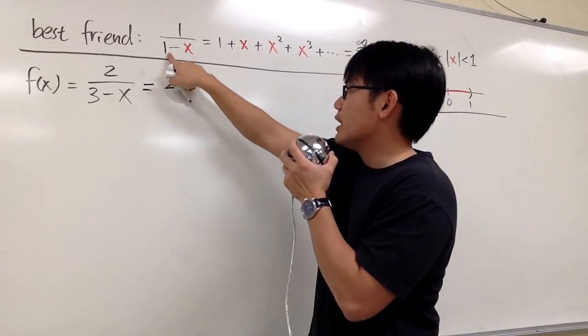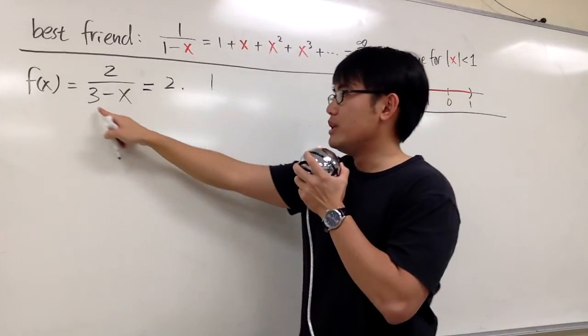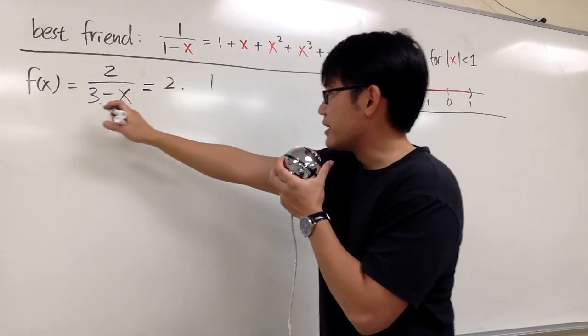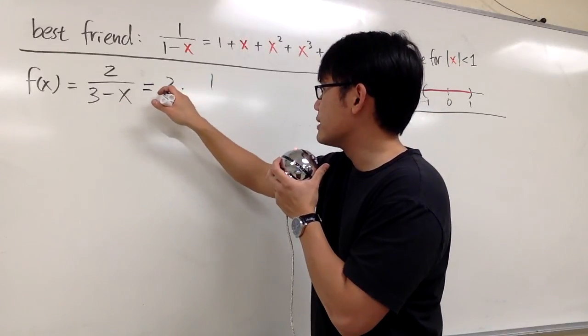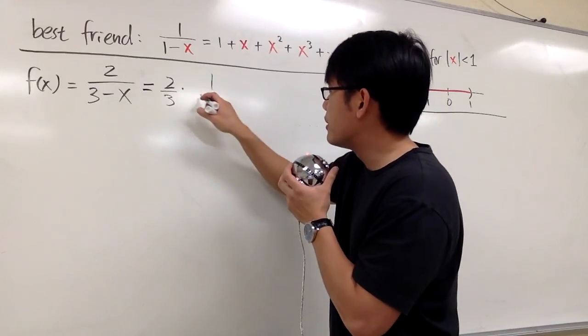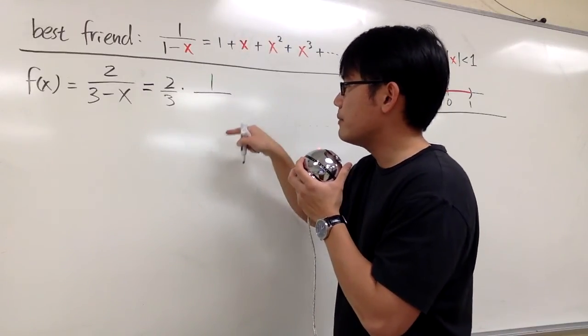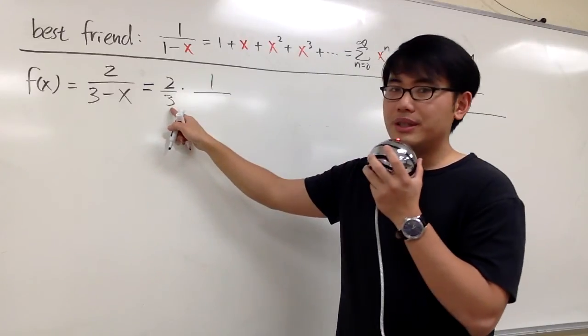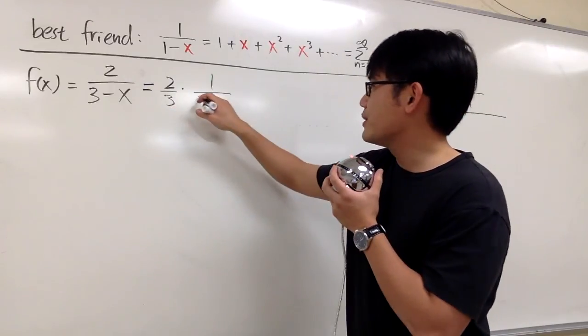Our best friend wants us to have the 1 right here, but here we have the 3. So what we can do is we can factor out the 3. It's on the denominator, so we can put this down as 2/3. But then on this right here, it's going to be 1 over... Originally we have the 3, we factor out this 3, so we have the 1 now. That's good.